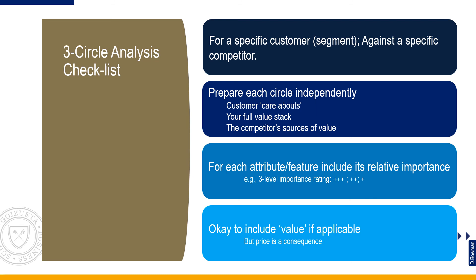Three-circle analysis checklist: Number one, it is for a specific customer or customer segment and against a specific competitor. Number two, prepare each circle independently. Number three, it can be helpful to attach a measure of relative importance to each attribute or feature. Number four, it is okay to include value as a customer need or source of value — which could be manifested in something like a larger packet size — but avoid including price, which is a consequence of the value you create. It is usually best to use the three-circle analysis framework to understand the value you create first, then use that to help you arrive at a market-based price.